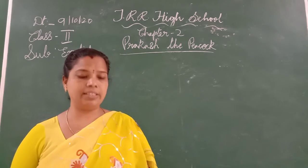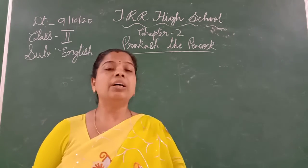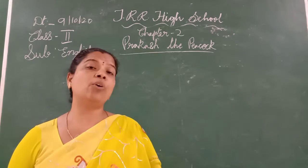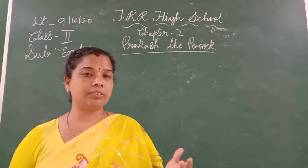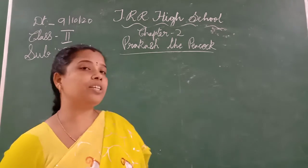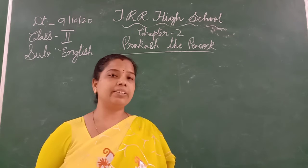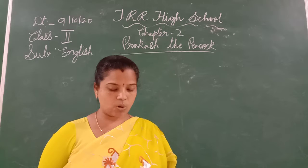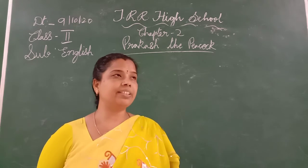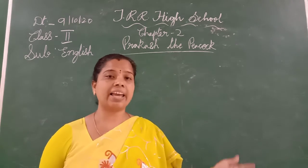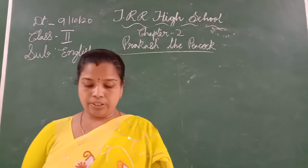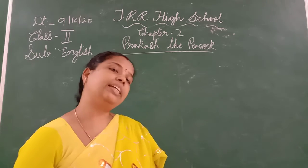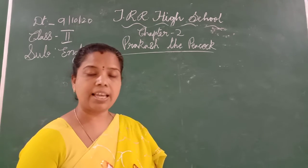We have discussed earlier what our national bird is, what it eats, and what the tail of the peacock is called. Our national bird is the peacock and the tail is called the train. The tail spreads its feathers like a fan and it contains up to 175 feathers. The peacock eats grains and vegetables.